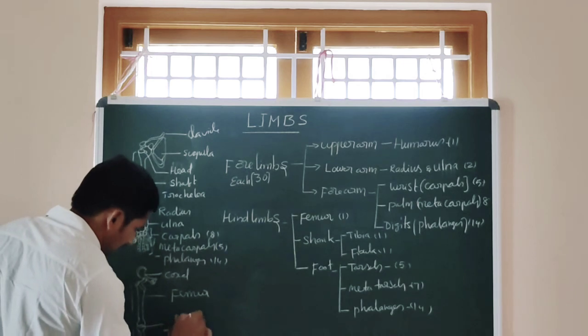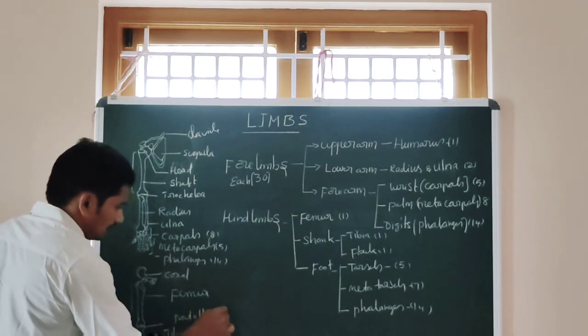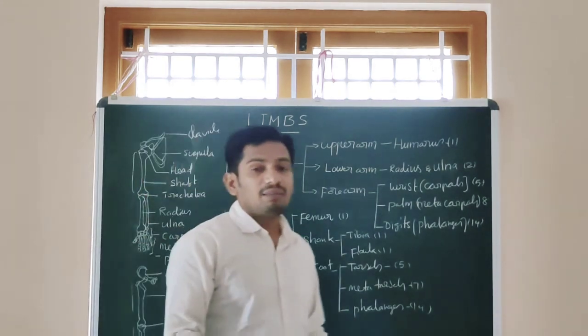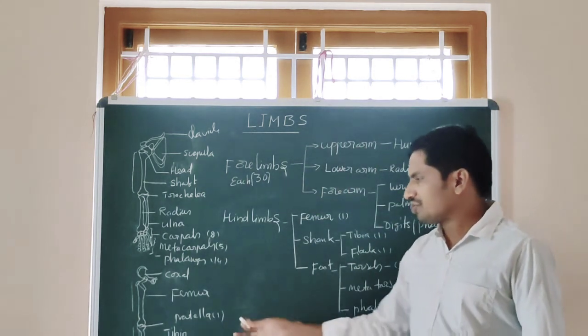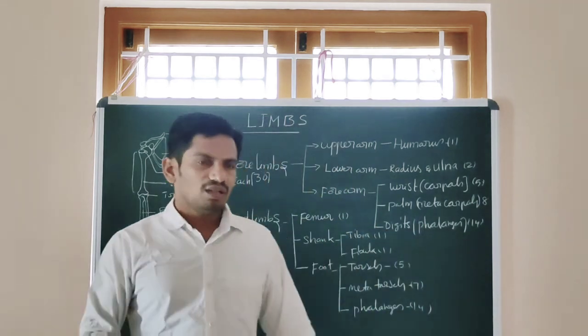One more is the patella bone. This is the patella bone, also known as the knee bone. So these all together make 30 bones.